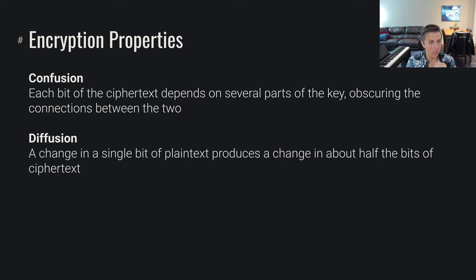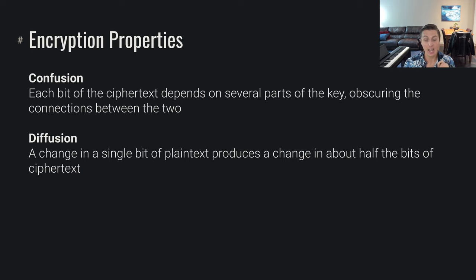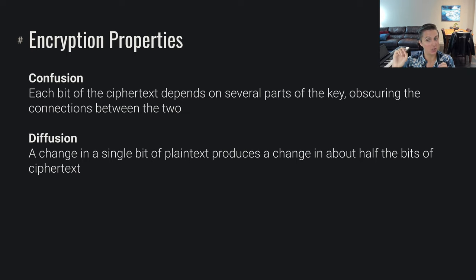Diffusion is very similar, but from the perspective of the plaintext: a change in a single bit of plaintext produces a change in about half the bits of the ciphertext. So both properties mean a small difference in plaintext completely changes the ciphertext, and a small change in the key completely changes the ciphertext. There's no statistical correlation or algebraic equation relating plaintext to ciphertext or key to ciphertext — we want a dramatically changed ciphertext in this avalanche-effect way.